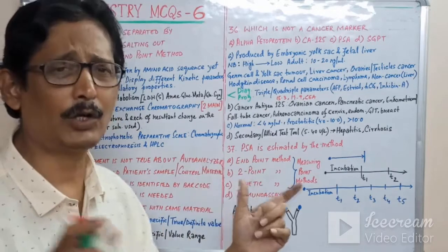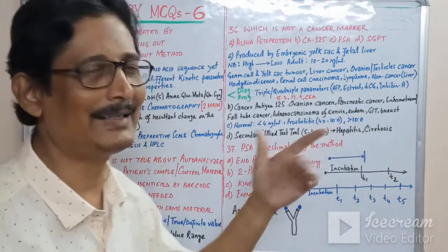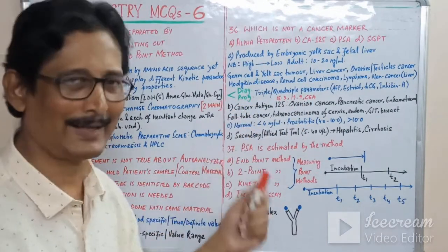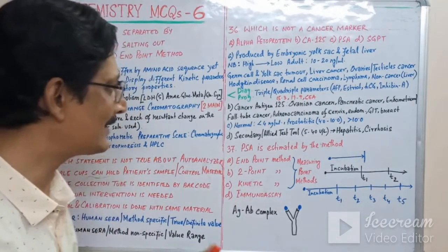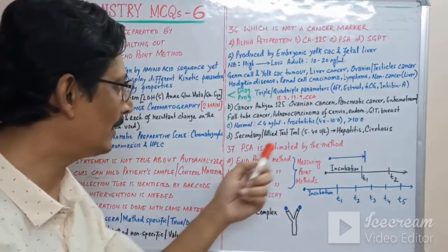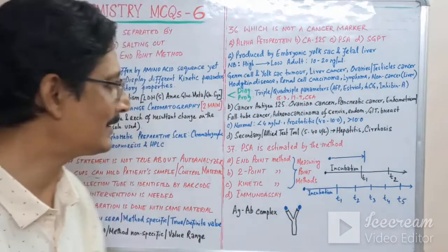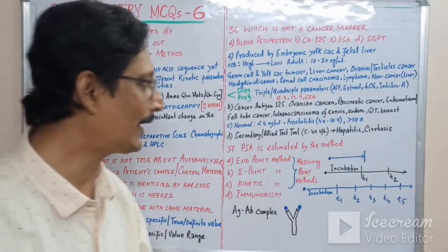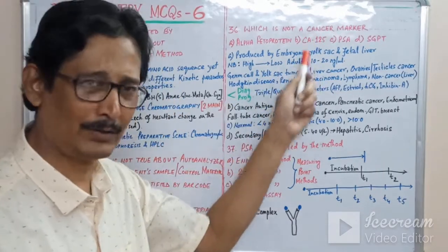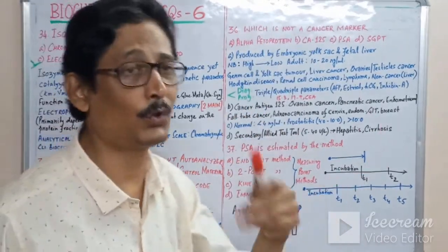AFP is often used in combination with triple or quadruple parameters — alpha-fetoprotein, estriol, and HCG. Option B, CA 125 (cancer antigen 125), along with CA 15.3 and CA 19.9, is mainly associated with ovarian cancer, pancreatic cancer, endometrial or fallopian tube cancer, adenocarcinoma of the cervix, gastrointestinal tract, or breast cancer. Both AFP and CA 125 are cancer markers.